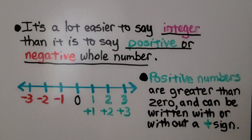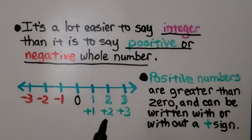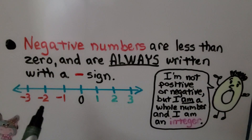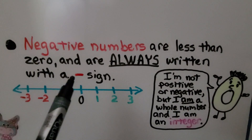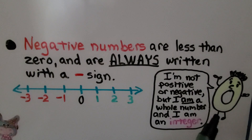It's a lot easier to say integer than it is to say positive or negative whole number. Positive numbers are greater than zero and can be written with or without the plus sign — it's usually without. Negative numbers are less than zero and are always written with the negative sign. And zero is not positive or negative, but he is a whole number and he is an integer.